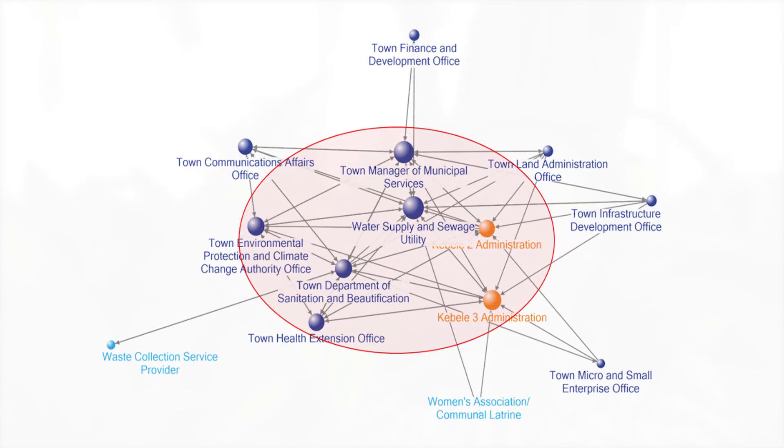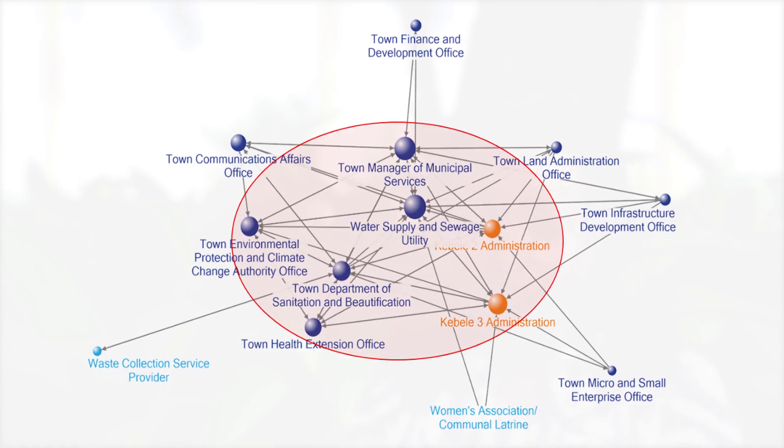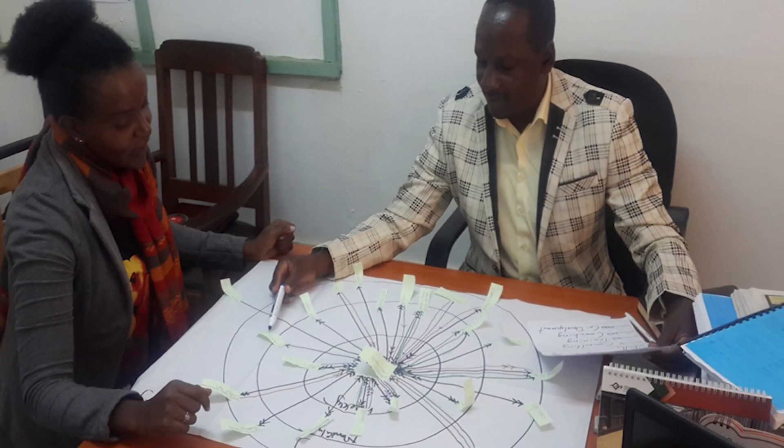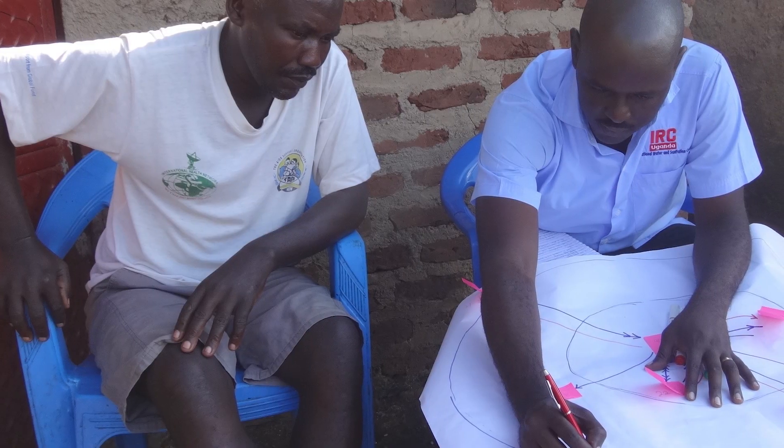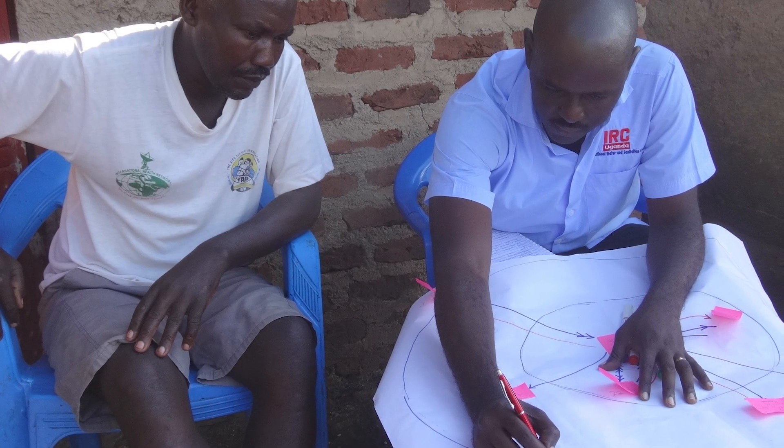The social network analysis provided a platform where we could know who the actors are within the system, as well as get an understanding of the different relationships — how they share information, whether they are sharing resources, and whether they are doing skills exchange amongst each other. So it created a baseline, an awareness of who is working within the sector. It was a very important and useful tool that helped us identify gaps and challenges in the interaction of the actors.